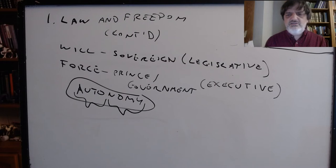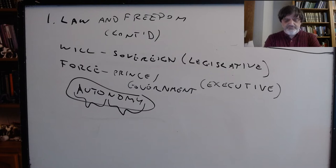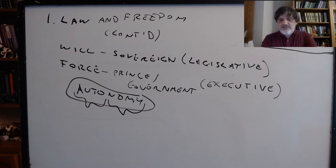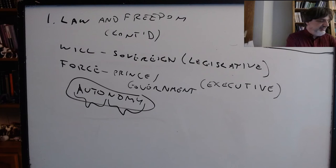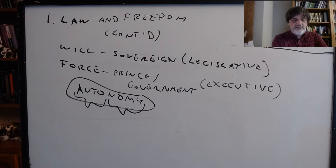Tamara asks for clarification on the force part — she understands the will part but is confused about force. If I disobey the sovereign, is the force put upon me? I think it's confusing because I'm talking about both the commonwealth as a whole and each individual. For the commonwealth as a whole, it's free — as I'm claiming Rousseau thinks about an individual — if its will, as rational and giving universal laws, rules over its force as particular. So the force, meaning the government, the executive, if the commonwealth is well constituted, can only do things authorized by the laws.